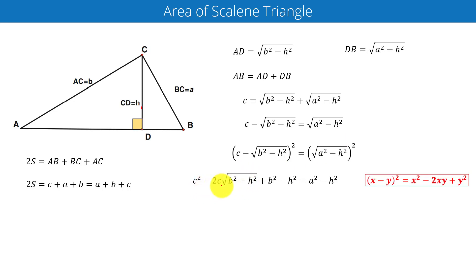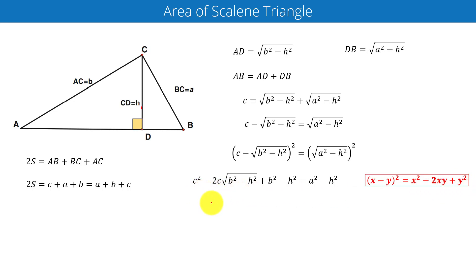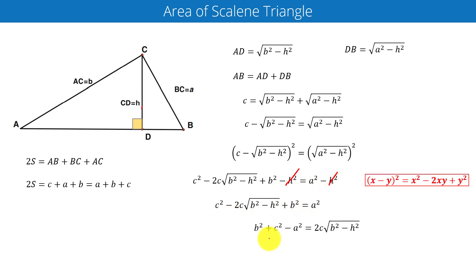c squared minus 2c times the square root of b squared minus h squared, plus b squared minus h squared, is equal to a squared minus h squared. We have used the identity (x minus y) squared equals x squared minus 2xy plus y squared on the left-hand side. Cancelling h squared from both sides, we simplify further.